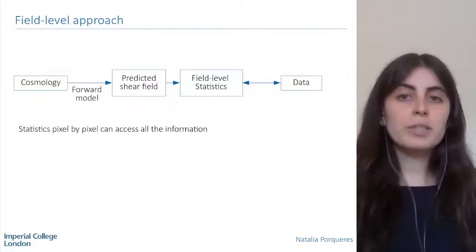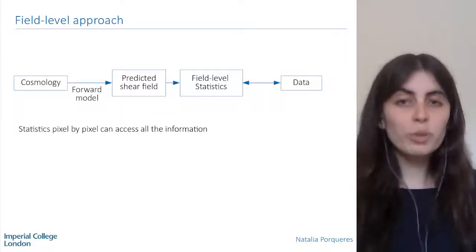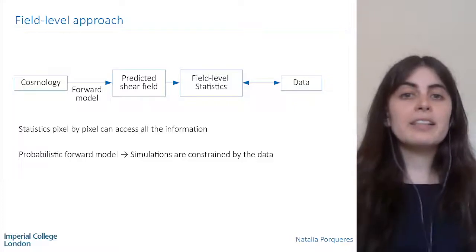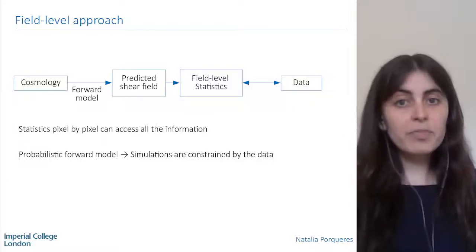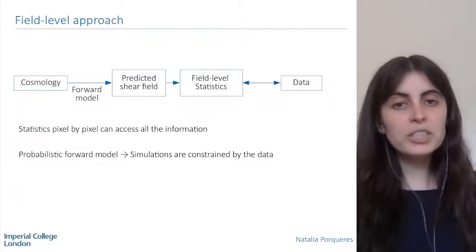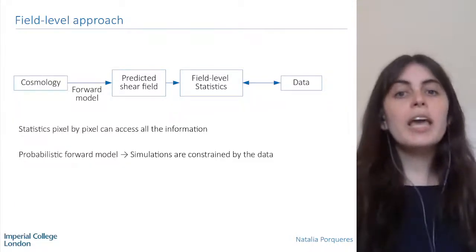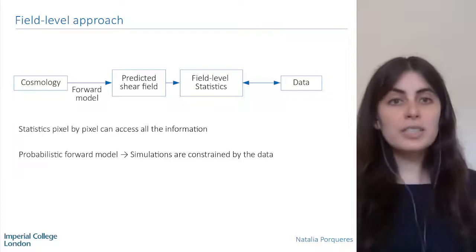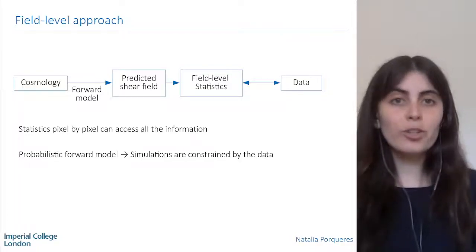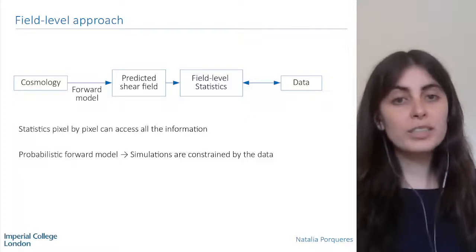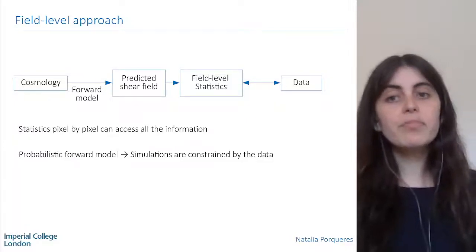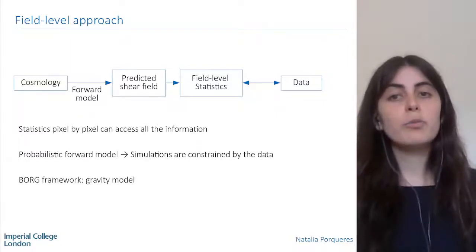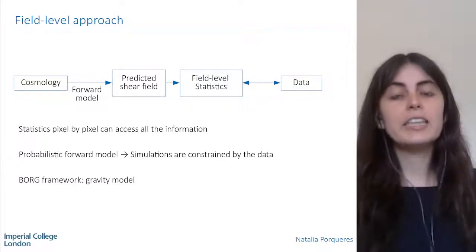To generate these predicted shear fields we need simulations — a forward model. We are dealing with a probabilistic forward model because the simulations are constrained by the data. Instead of using simulations to train a machine as in a machine learning approach, here we only explore the dark matter distributions that can plausibly lead to the structures we see in the data. At the end we get a reconstruction of the dark matter distribution in the universe. To do that we use the Borg framework, because Borg has a gravity model, which is essential to capture the non-linearity and non-Gaussianity of the large-scale structures.